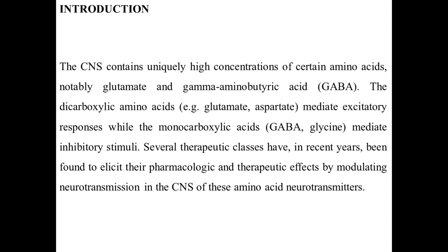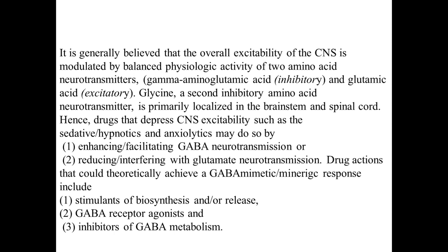Several therapeutic classes have been found to elicit pharmacological and therapeutic efficacy by modulating neurotransmission in the CNS via these amino acid neurotransmitters. The overall excitability of the CNS is modulated by the balance of physiological activity of two neurotransmitters: GABA, which is inhibitory, and glutamic acid, which is excitatory. By balancing excitation and inhibition they maintain homeostasis of the CNS.